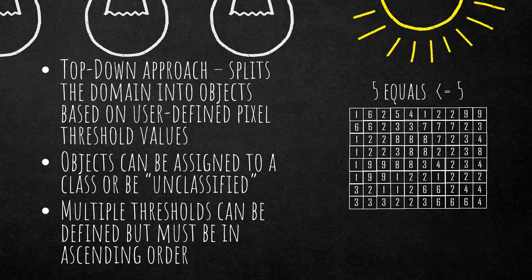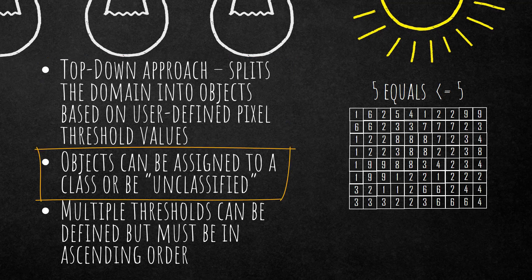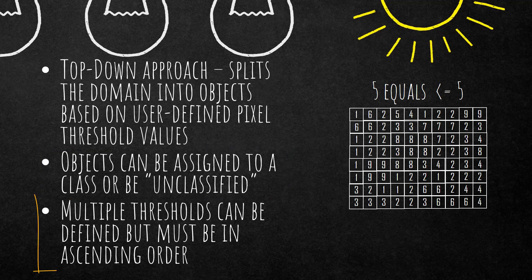Here is the theory. This is a top-down approach which splits the domain into objects based on user-defined pixel threshold values. The generated objects can then be assigned to a class or be unclassified, so you can instantly classify your image objects. It's based on multiple thresholds, not just a single one — you can use just one, but using multiple thresholds is more fun.